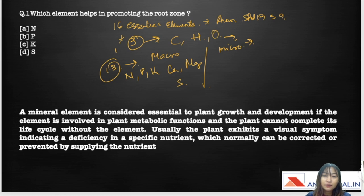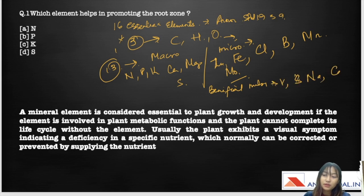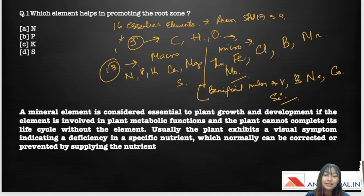On the other hand, for micronutrients, we have zinc, iron, chlorine, boron, manganese, and molybdenum. Other than this, we have some beneficial nutrients like vanadium, sodium, cobalt, and silicon. It's very important to know their roles. Each of these elements has its own particular role and plays a vital part in the proper functioning of the plants, and each will have different distinctive deficiency symptoms as well.